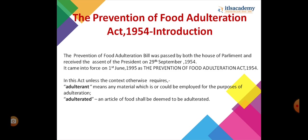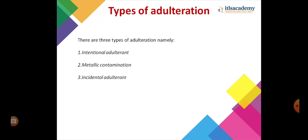In this act, unless the context otherwise requires, 'adulterant' means any material which is or could be employed for the purpose of adulteration, and an article of food shall be deemed to be adulterated. There are various types of adulteration; the main three are: intentional adulterant, metallic contamination, and incidental adulterant.